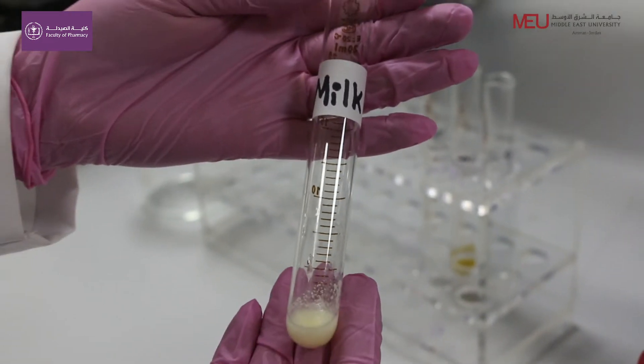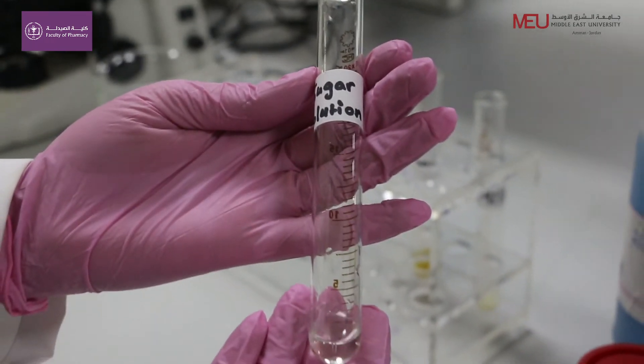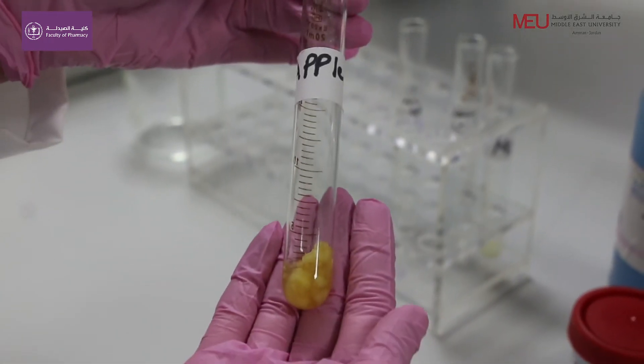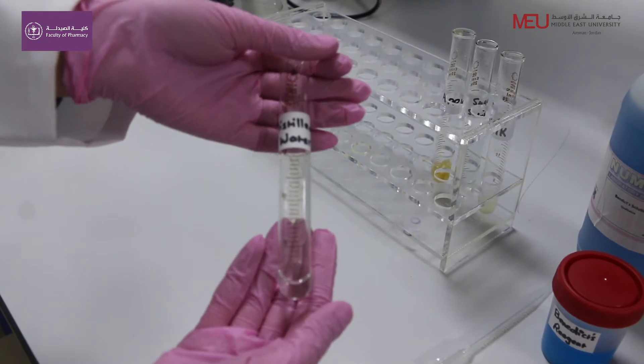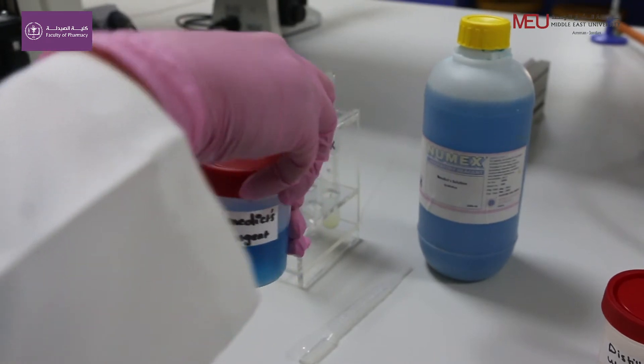In each test tube place 1 ml sugar solution, a piece of fruit with some water, and 1 ml distilled water. Add an equal amount of Benedict's solution to each test tube.